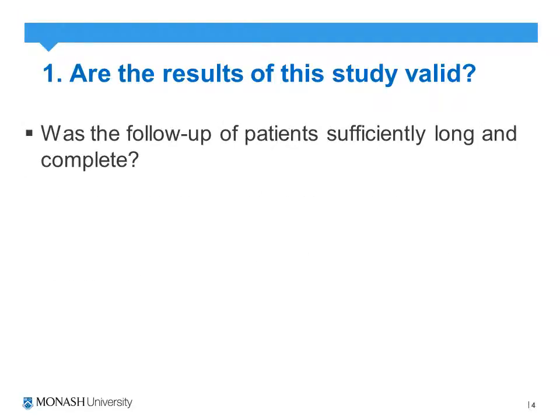The next set of questions relates to attrition bias: was the follow-up sufficiently long and complete? If we've got a randomised control trial looking at, for example, the treatment of osteoarthritis patients with glucosamine, we'd be interested in both short-term follow-up — one to two weeks — as well as long-term follow-up of two to three months, 12 months, or 18 months. The duration of follow-up needs to be specified and appropriate for the question being asked.